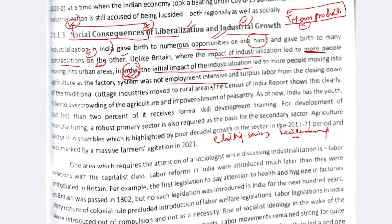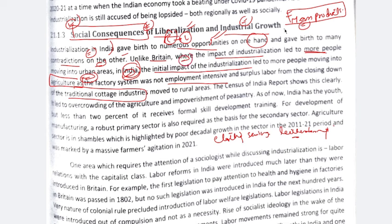These displaced workers did not get employment in industries because the factory system was not employment intensive — machines did the work. So those made jobless by the closure of traditional industries went back to agriculture. Unlike Britain where industrialization led to rural to urban migration, the initial impact in India led to more people moving into agriculture — urban to rural. As the factory system was not employment intensive, the surplus labor from closing down of cottage industries moved to rural areas.